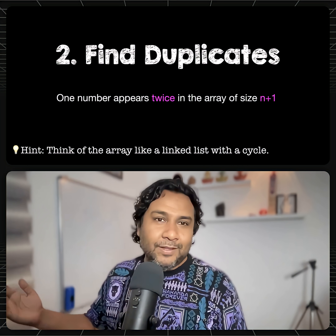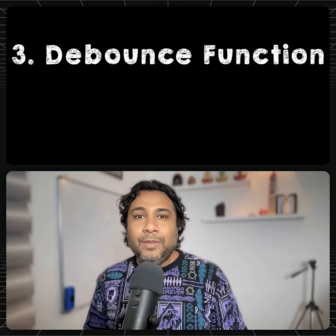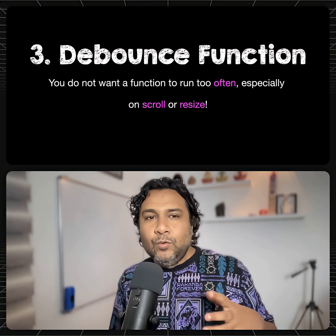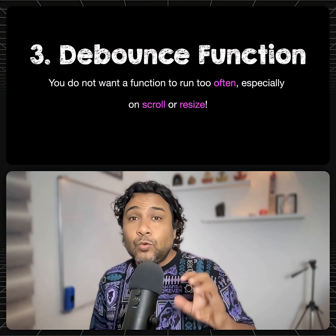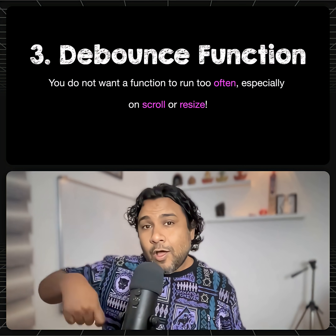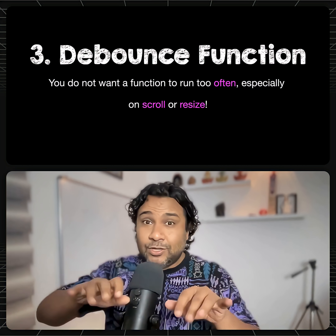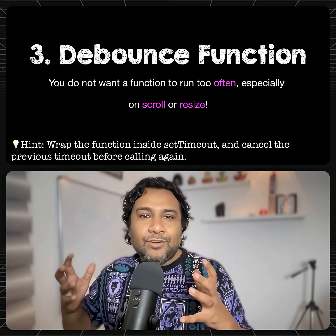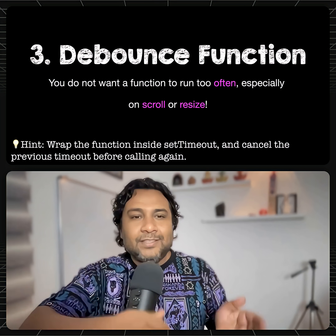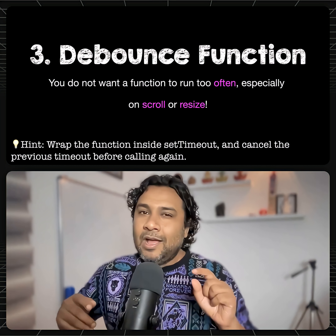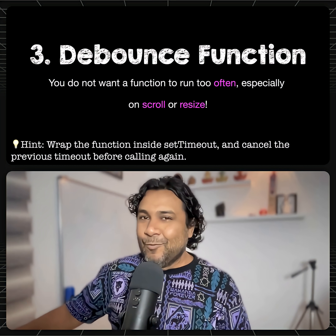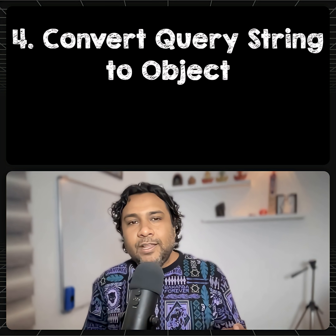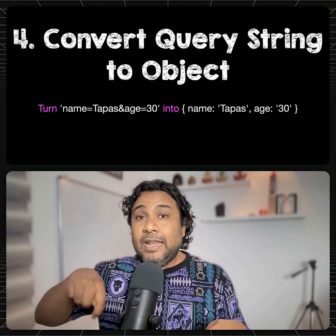The third problem is about writing a debounce function. You need it when you do not want a function to run too often — especially when you scroll, resize, or search very fast. Wrap a function inside setTimeout with a duration or delay, and cancel the previous timeout before you call it again. We have actually touched on this in one of our recent sessions.